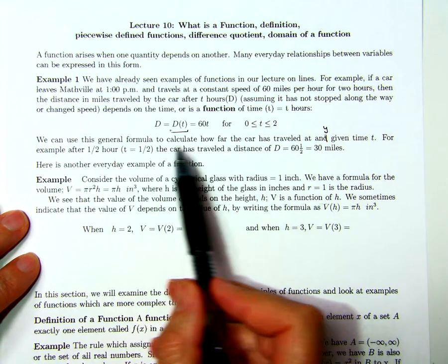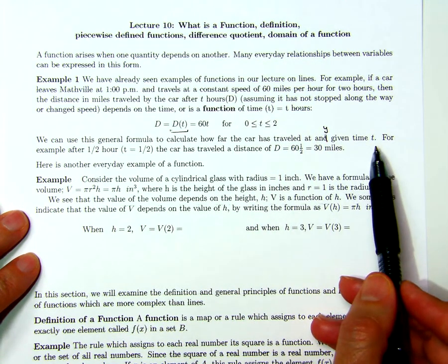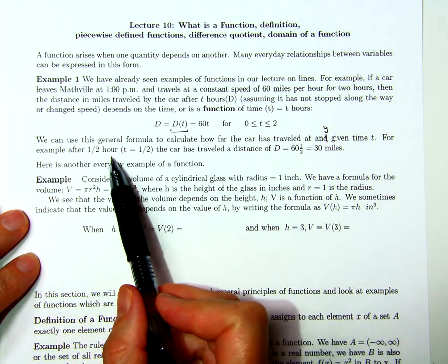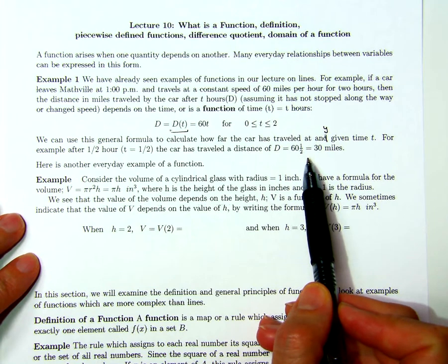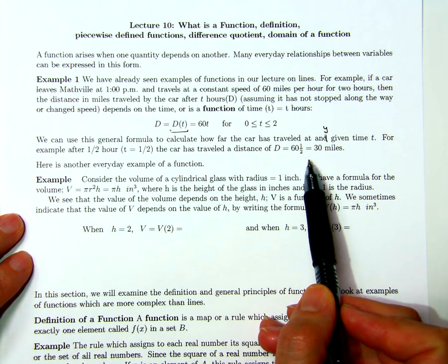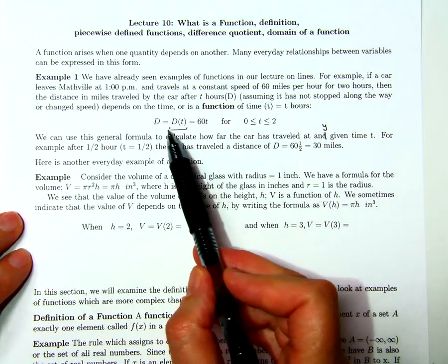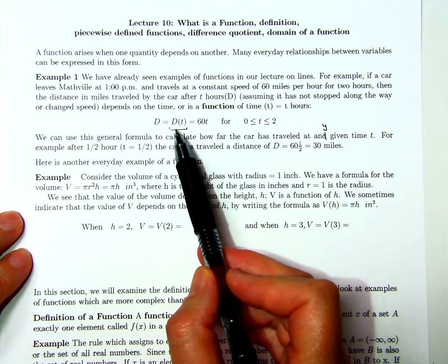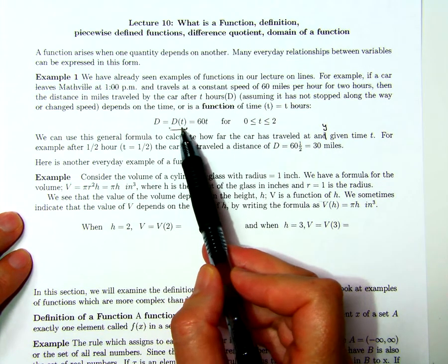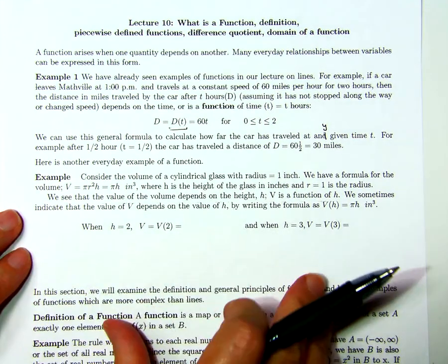We can use this formula to calculate how far the car has traveled at any given time t. For example, after half an hour the distance traveled is 60 times one-half or 30 miles. That's a very simple example of a function where the distance traveled depends on the amount of time that has passed since the car left Mathville.